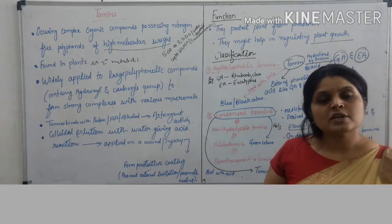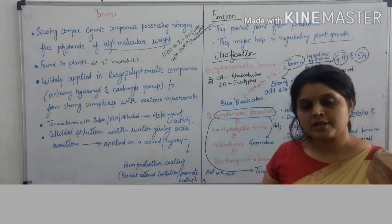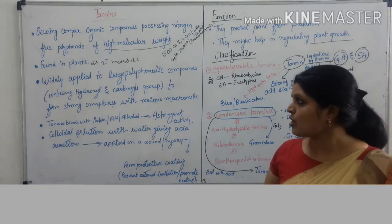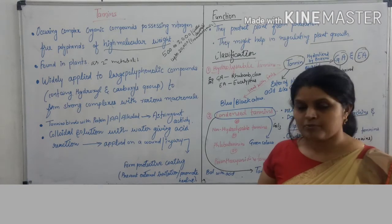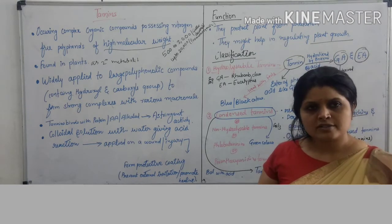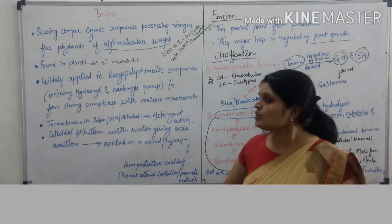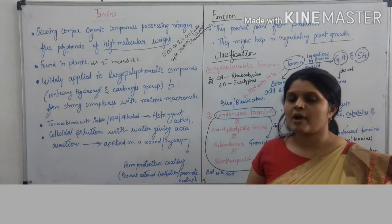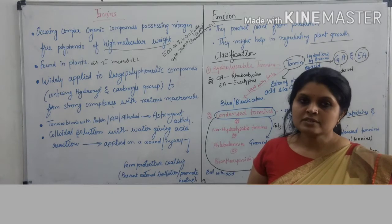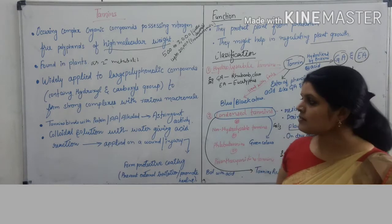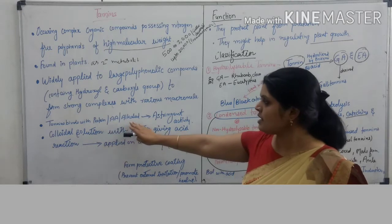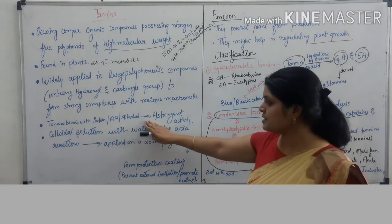Tannins are found in plants as secondary metabolites, and they are large polyphenolic compounds containing hydroxyl and other groups like carboxyl, which form strong complexes with macromolecules. This means tannins bind with proteins, amino acids, and alkaloids and precipitate them.